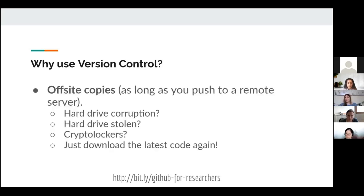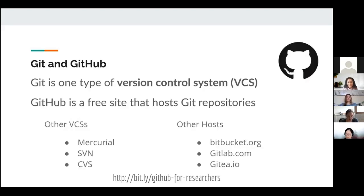Version control also gives you off-site copies of your software. Everyone has computer issues — everyone loses a hard drive at some point or gets their hard drive encrypted by hackers. If you have all of your work in the open and public, then you can just download a new copy and start working again. Git and GitHub are a very common choice, with a large existing user base and large community of people who will be able to contribute to your software, and it's a low barrier for entry.